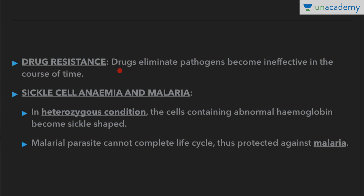Similarly, the next example is drug resistance. Drugs used to eliminate pathogens become ineffective over time because individuals of pathogenic species which can tolerate them survive and flourish, producing tolerant species. Hence, there is evolution by anthropogenic action. These resistant organisms appear on a time scale of months and years, not centuries. Excessive use of herbicides, pesticides, etc. has also resulted in selection of resistant varieties in a much shorter time scale.